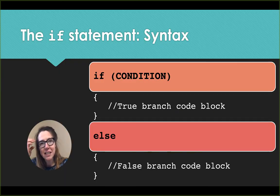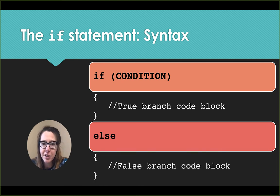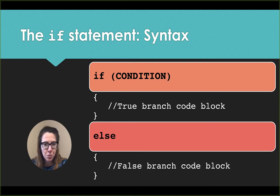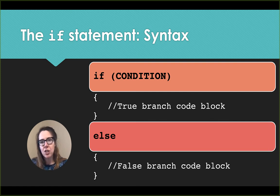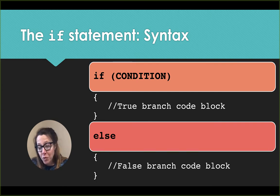Here's the syntax: we have if and then some Boolean condition — one that evaluates to true or false. Any statements that follow within the code block make up the true branch; that's what we do if the condition is true. Everything that follows the else is what we do if the condition was false.